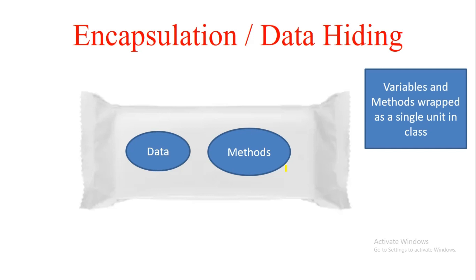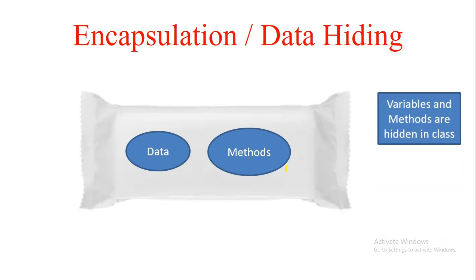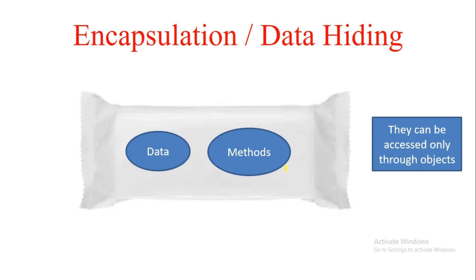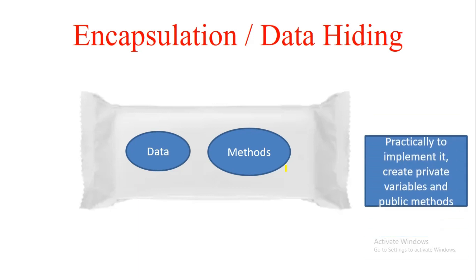The way to implement encapsulation is to implement a class, but with two more things. Variables and methods are actually hidden — hidden because they are inside a class. Nobody outside can see them; only the class where they are defined knows about these data and methods. They can be accessed only through objects.